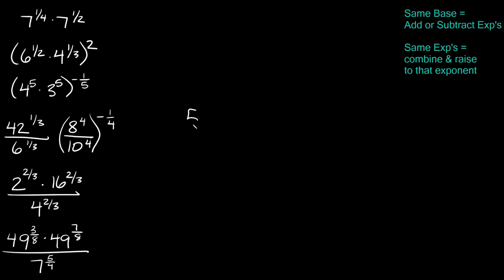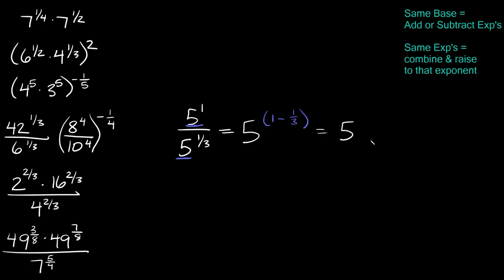This one wasn't written down, but let's do it anyway: five divided by five to the one-third. The five in the numerator has no written exponent, so it's the same as five to the first. We have the same base — five and five — so since we're dividing, we subtract the exponents, always writing the numerator exponent first. So this equals five raised to one minus one-third. One minus one-third equals two-thirds, so our final answer is five raised to the two-thirds.